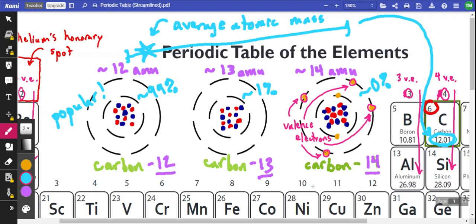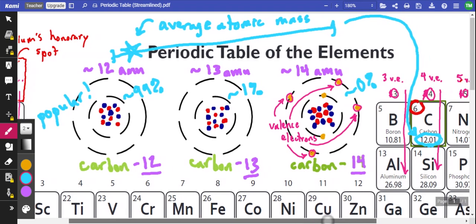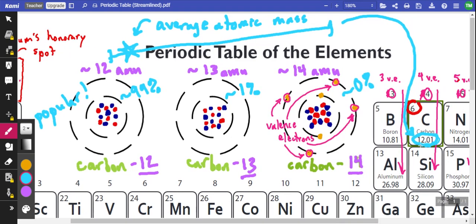Now, again, long story short, that number is already there for us on the periodic table. And it's this decimal number we've kind of been avoiding up to this point. This is the average atomic mass, that weighted average for an element. And it takes into account all the different isotopes that make up that element.